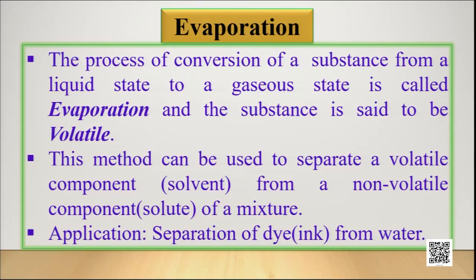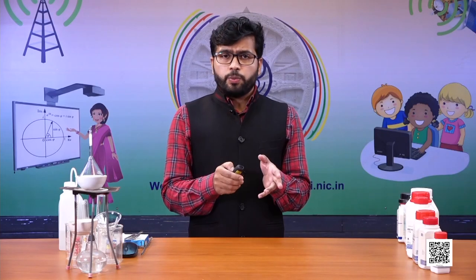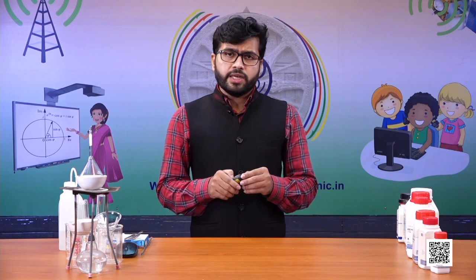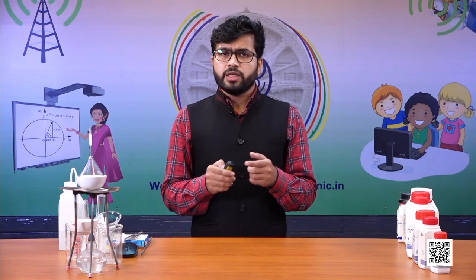One example is the separation of dyes from ink, which is dissolved in water. Ink is a solution of ink pigments — that is, dyes — in water. Here, the dyes are your solute particles and water is your solvent. Water being volatile in nature, when you heat the mixture, it will get evaporated out and we can easily separate the dyes.